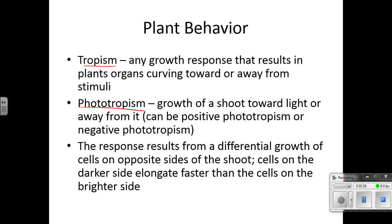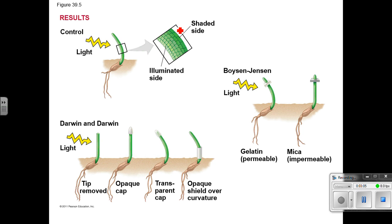Tropism and phototropism — we talked about this when we did the worksheet on plant hormones. Any growth response that results in the plant's organs moving toward or away from a stimulus. Phototropism is the one we looked at: photo means light, and tropism means moving or growing towards. So this is where the shoot grows towards the light, or it could actually grow away from it — positive versus negative. The response results from a differential growth of cells on the opposite side of the shoot. Cells on the darker side elongate faster than cells on the brighter side. You'll notice in this picture that the elongated cells are caused by auxin, which causes the shoot to bend.